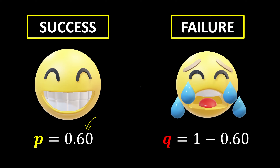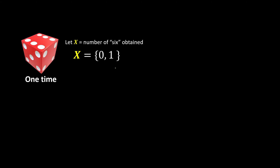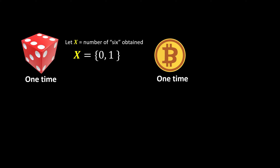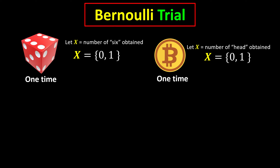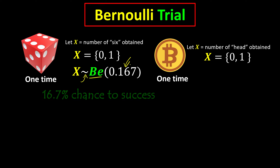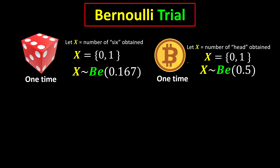As we can see, if we have 60% for success then we have 40% for failure. Let's begin the experiment with rolling a dice one time. I can use the random variable x to represent the number of sixes I might obtain. Since I only roll once, the maximum number of sixes is one, or if I'm unlucky, zero. Similarly, if I toss a coin once, x represents the number of heads, with a maximum of one and a minimum of zero. This is what we call a Bernoulli experiment. Each observation is a Bernoulli trial, where each observation has a probability of 0.167 for success — that is, the probability of getting a six. For the coin, each observation has a 0.5 probability of success — getting a head.